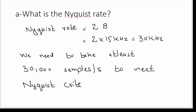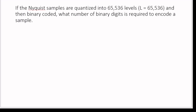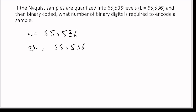Let us move to the second part. If the Nyquist samples are quantized into 65536 levels and then binary coded, what number of binary digits is required to encode a sample? Here L equals 65536, the number of quantized levels. We know that the number of bits required to encode each sample satisfies 2 to the power n equals 65536, where n is the number of bits per sample.